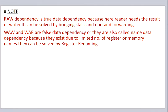Read after write dependency is true data dependency, because here the reader needs the result of the writer. It can be solved by introducing stalls and operand forwarding. Write after write and write after read are false data dependency, also called name data dependency, because they exist due to a limited number of register or memory names. Hence they can be solved by register renaming.